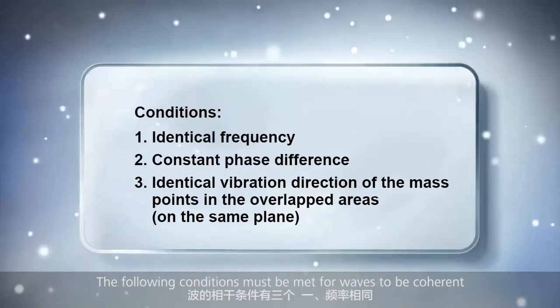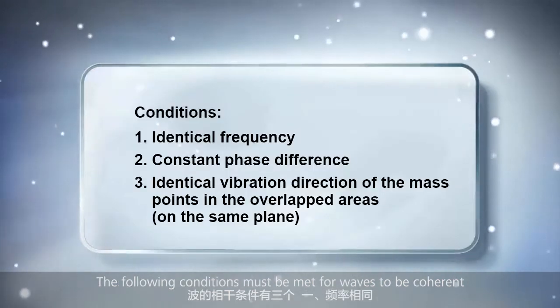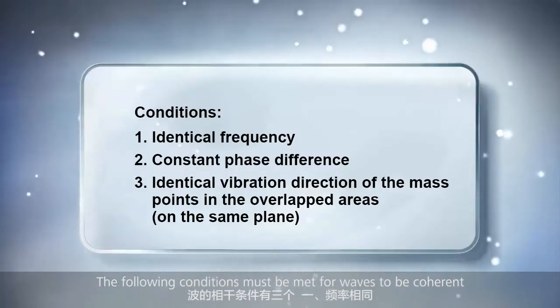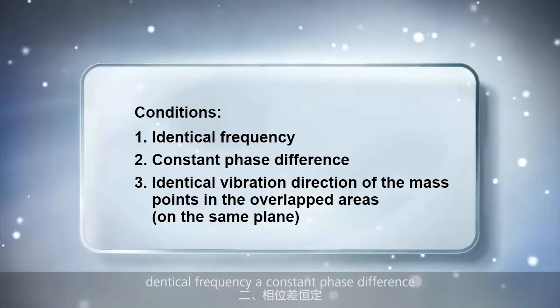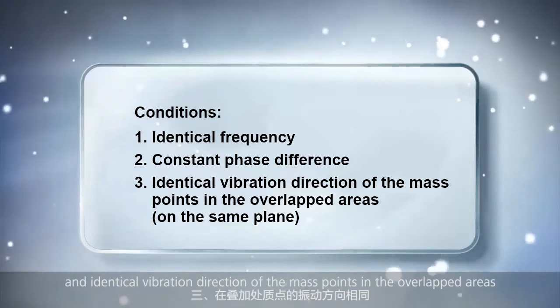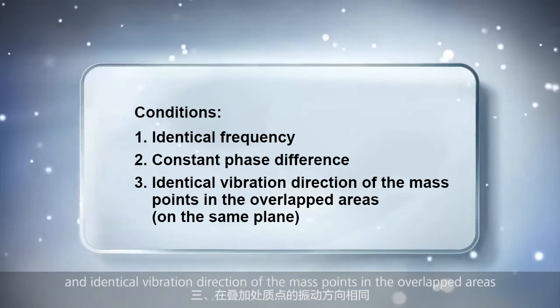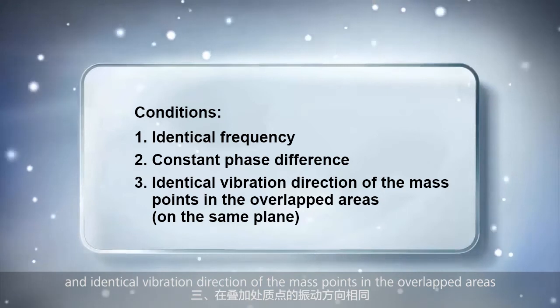Waves that can interfere with each other are called coherent waves. The following conditions must be met for waves to be coherent: identical frequency, a constant phase difference, and identical vibration direction of the mass points in the overlapped areas.